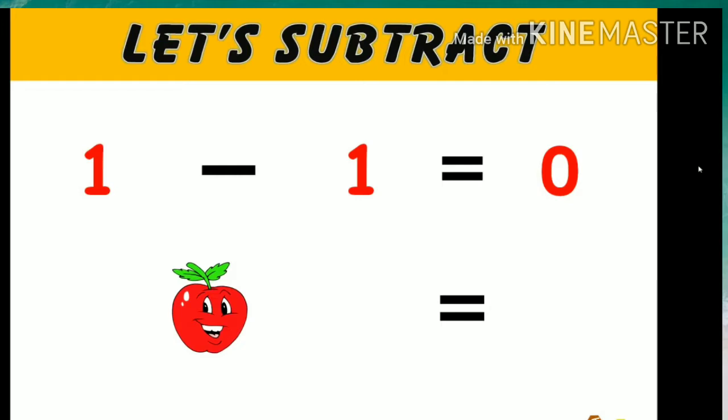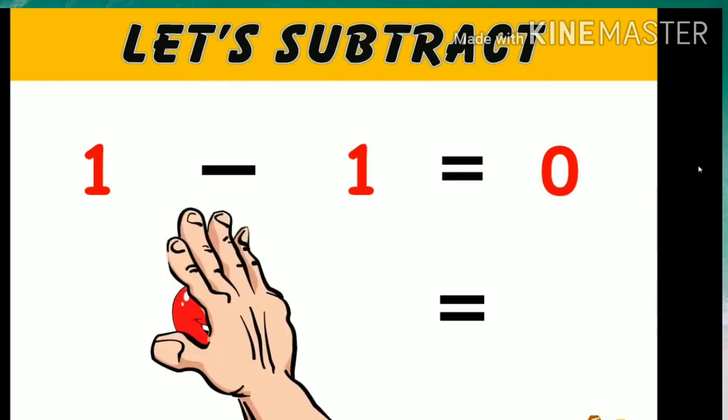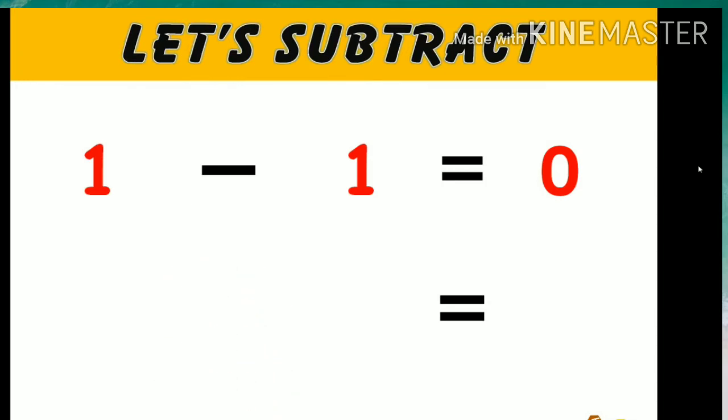Let's subtract. 1 minus 1 equals 0. If we have one apple and we take away that one apple, we have zero apples left.